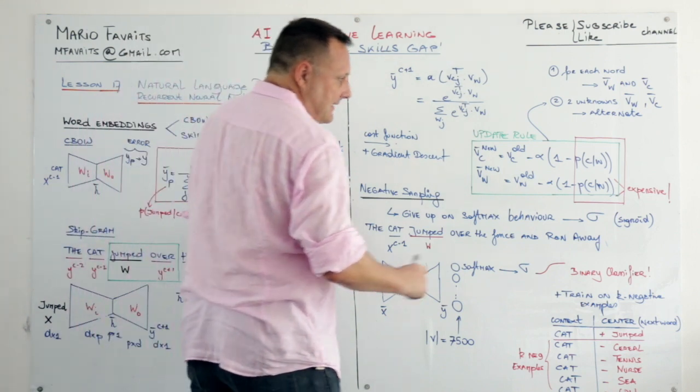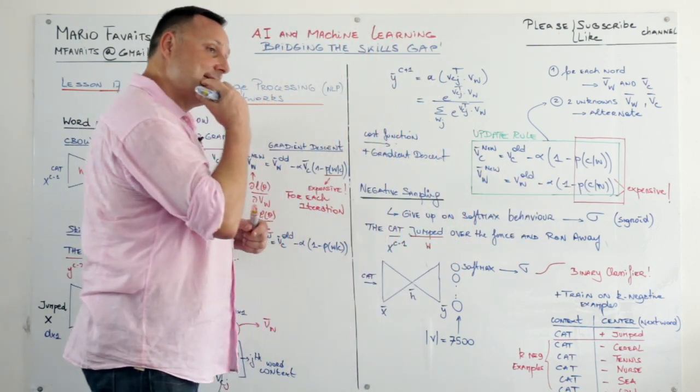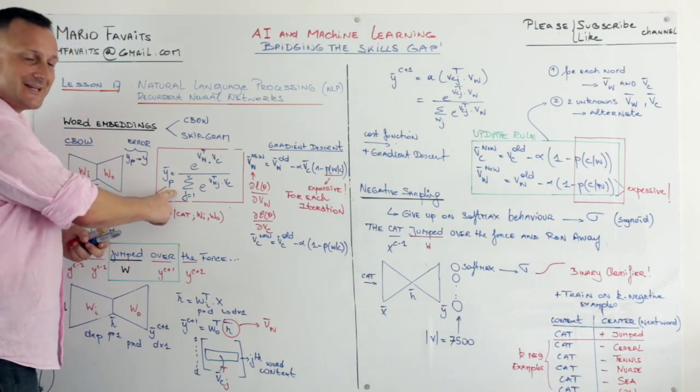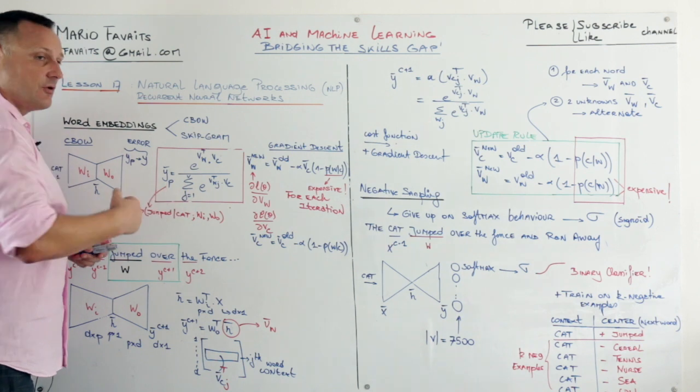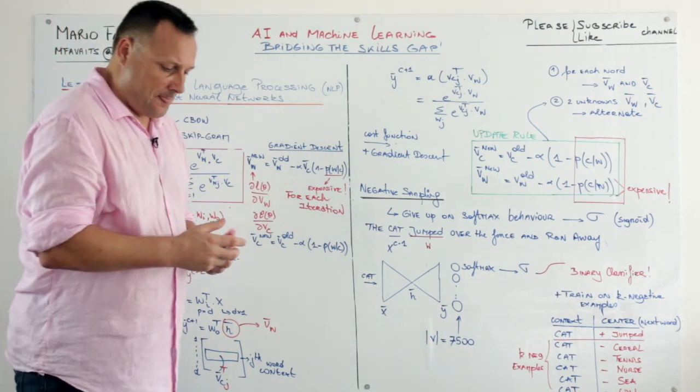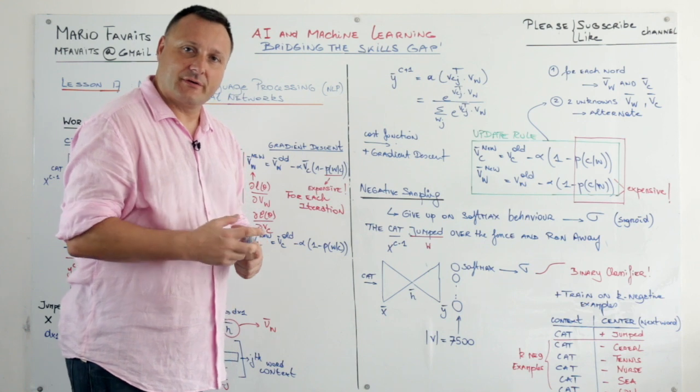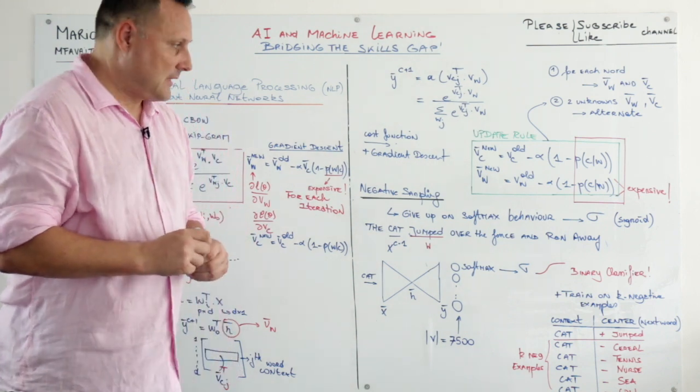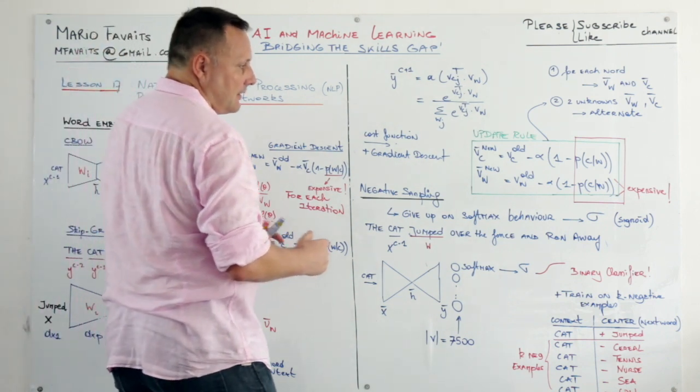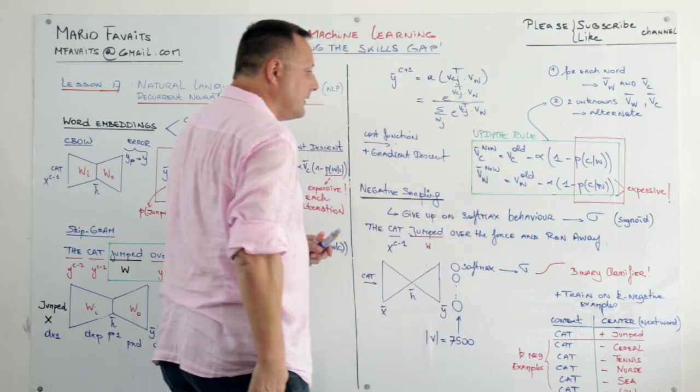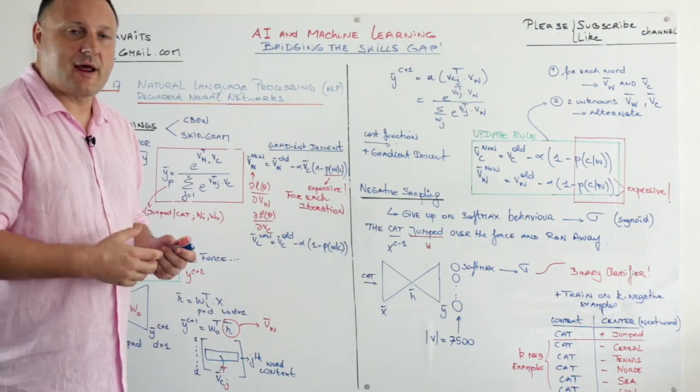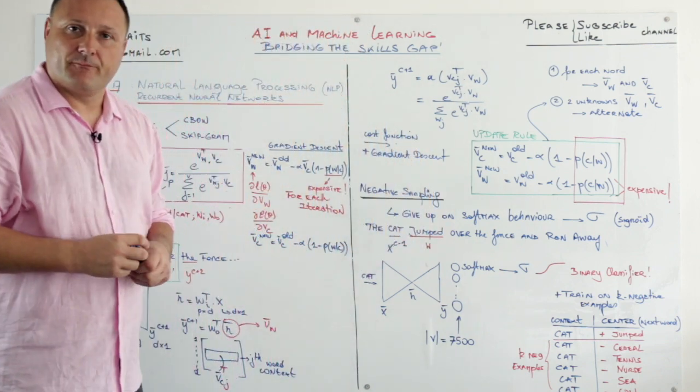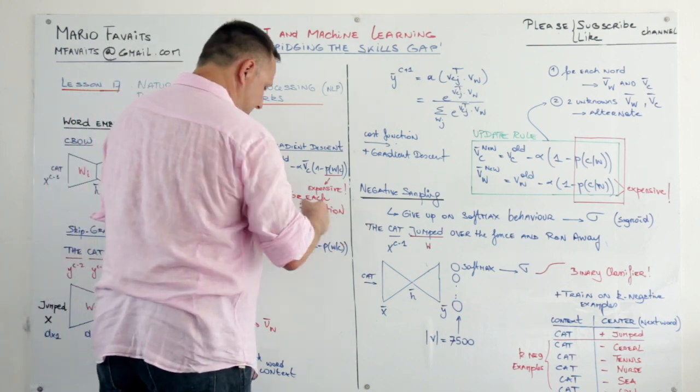We have also seen that these softmax formulas of which you see the detail here are very expensive computationally because you need to sum over all the words in the vocabulary. And we have always used 7500 up to now. But your vocabulary can easily be 100,000 words as well. So it's not practical to either use C-Bow or Skip-Gram if we just do as we did before. So that's how we get to negative sampling.